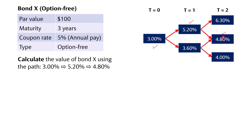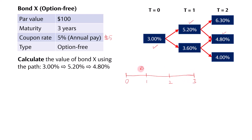When using Pathwise Valuation to calculate the value of a bond, the first thing you need to identify is the cash flows. The coupon is 5% × $100 = $5 per year for 3 years. Drawing a timeline from year 0 to year 3, we have $5 at year 1, $5 at year 2, and $105 at year 3 (coupon plus principal).